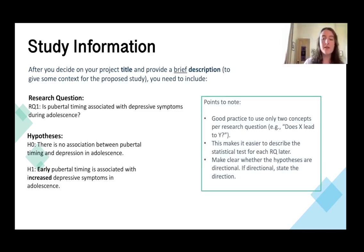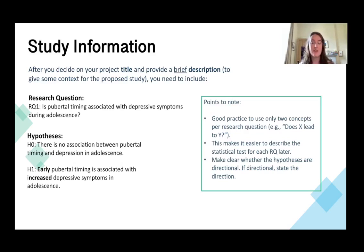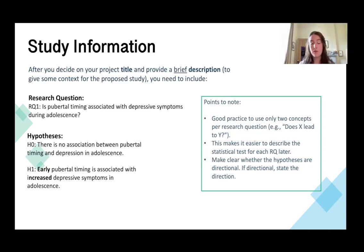It's good practice to only use two concepts per research question. You might have a couple of research questions in your dissertation, but this two-concept rule makes it easier to decide upon your research question and the relationship you want to study. It also makes it much easier to decide upon a statistical test. You can also see in my first hypothesis that I've made the directionality of the association clear — early pubertal timing is associated with increased depressive symptoms. It really is important to give as much information as possible, as this sets the tone for the rest of your project.